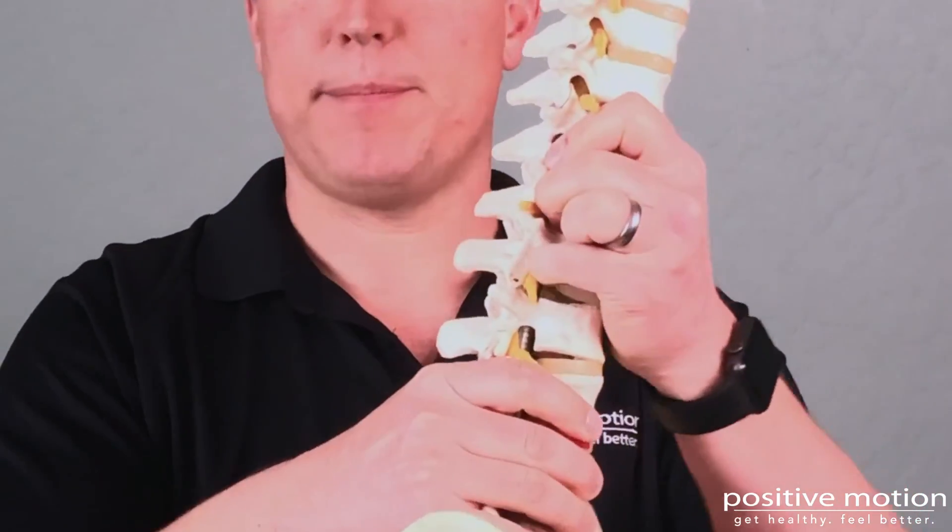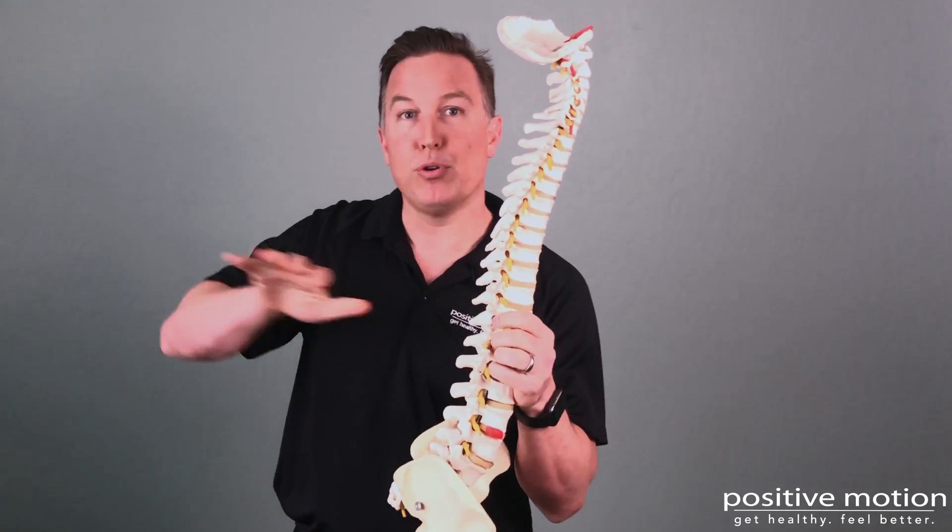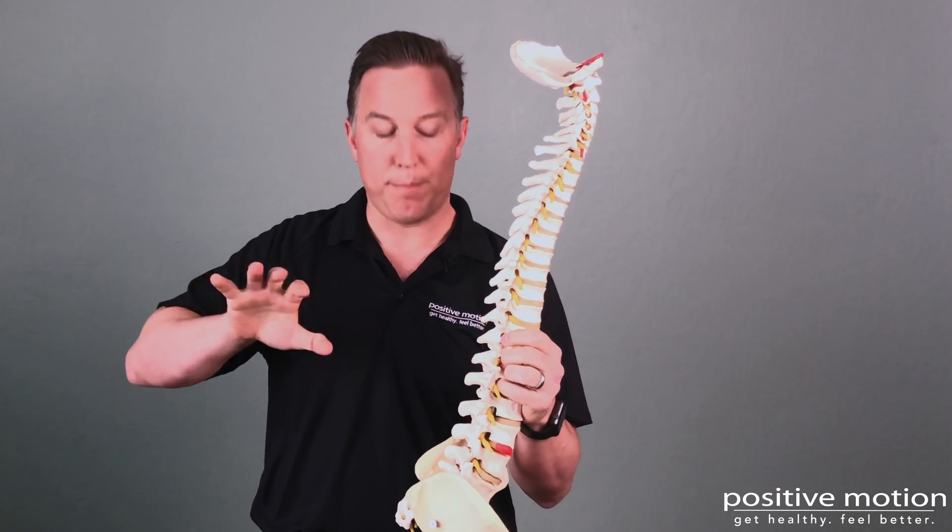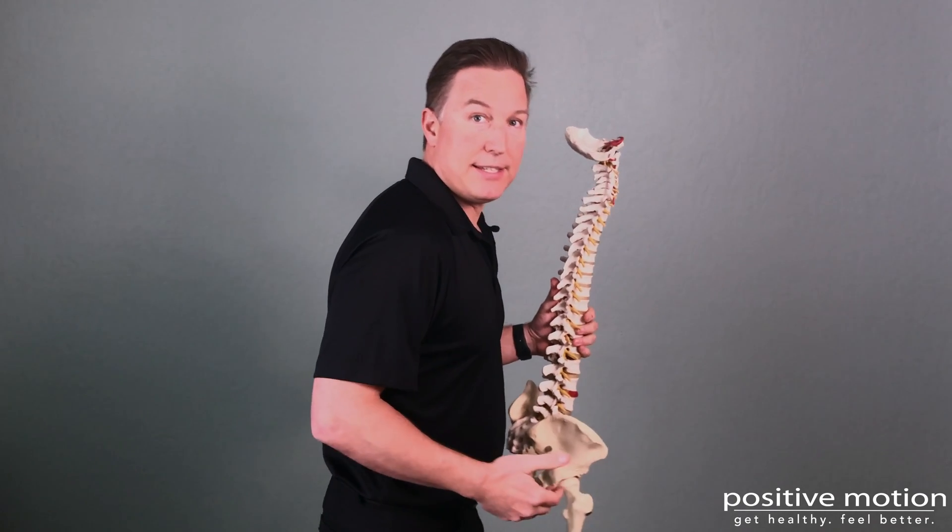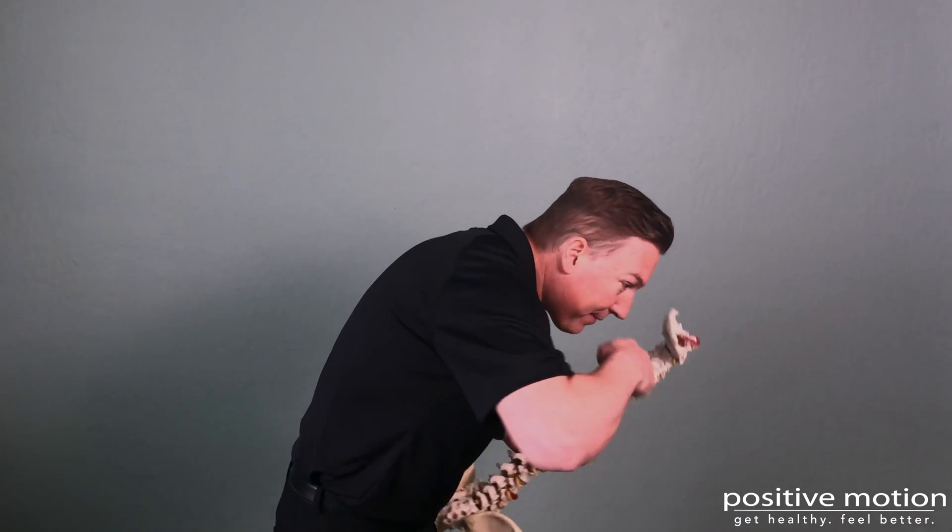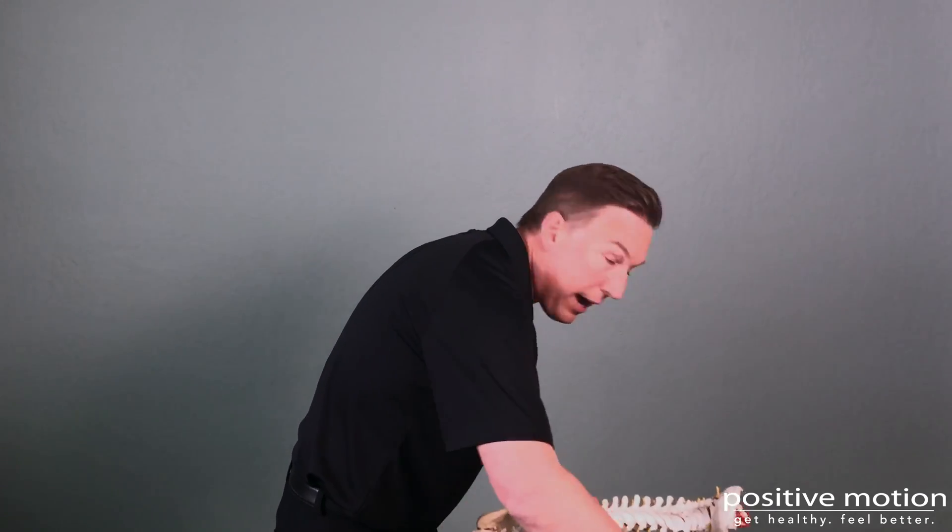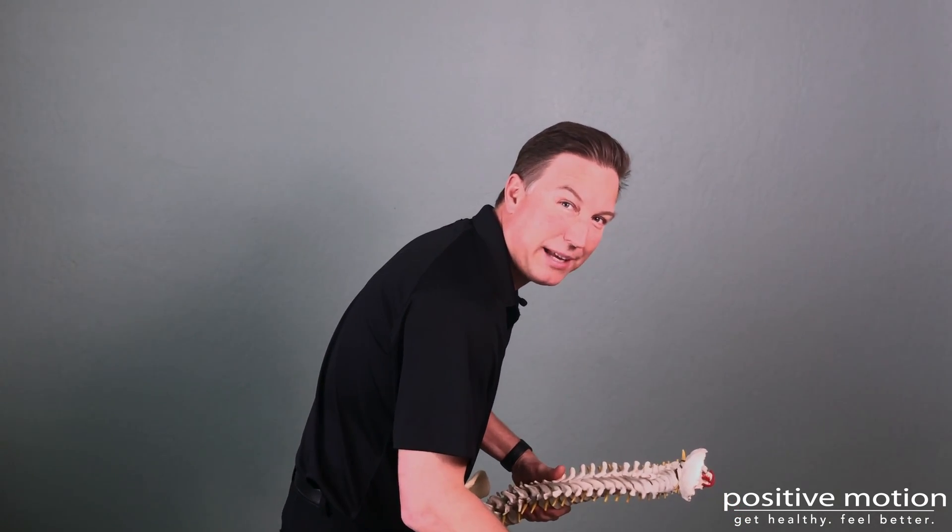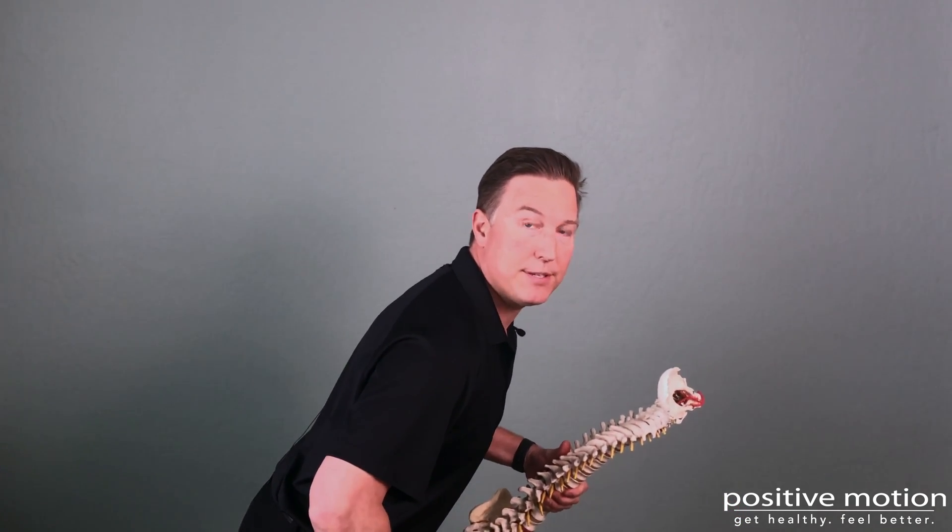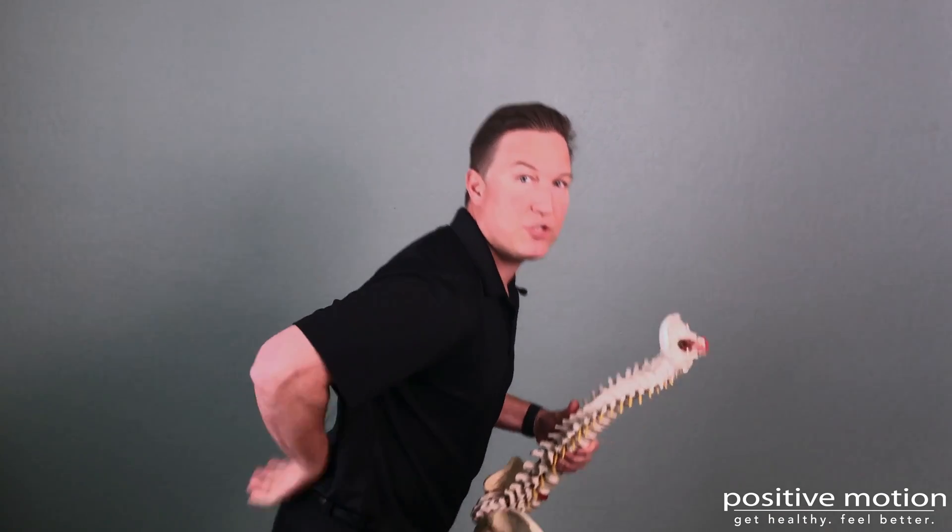And over time, that takes and pushes the disc material back towards where it inevitably bulges. It would look like this, someone bending at their back to brush their teeth or to grab something. I look like an old man here, right? Versus them bending at their hips and keeping their spine straight.